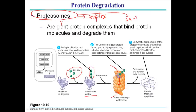Once the protein enters the proteasome, it is degraded. Recall that chaperone proteins help arrange the secondary structure of proteins and provide a suitable environment for protein folding. Similarly, inside the proteasome, chambers provide an environment that triggers structural instability in the protein — for example, by interacting with the charge distribution on the outer layer of the protein.